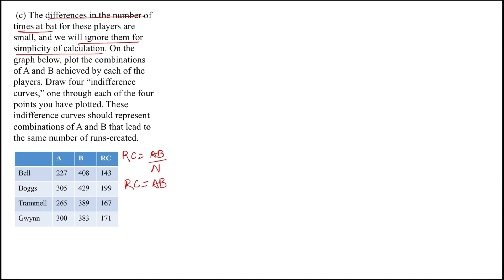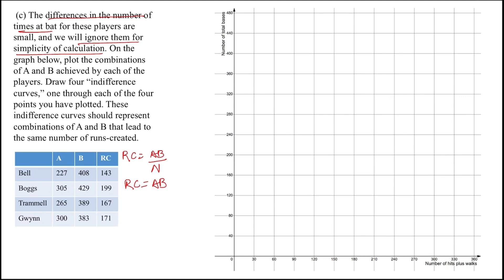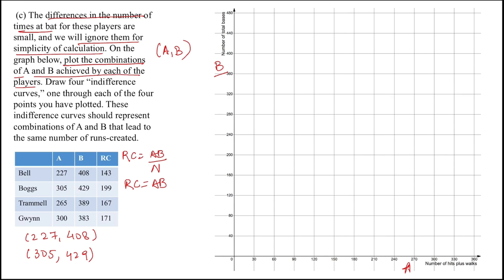We are given a graph where the x-axis is the number of hits plus walks, which is A, and the y-axis is the number of total bases, which is B. The question asks us to plot the combinations of A and B for each player, so each point is of the form (A, B). For Bell the point is (227, 408), for Boggs it is (305, 429), for Trammell it is (265, 389), and for Gwynn it is (300, 383).